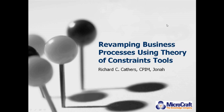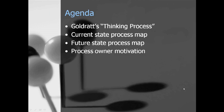Let's go over what we're going to be talking about today. We're going to look at Goldratt's thinking process, which is a companion process to his Theory of Constraints. We're going to look at current state process mapping, future state process mapping, and most importantly, how to get the process owners motivated to implement the change that has to happen.